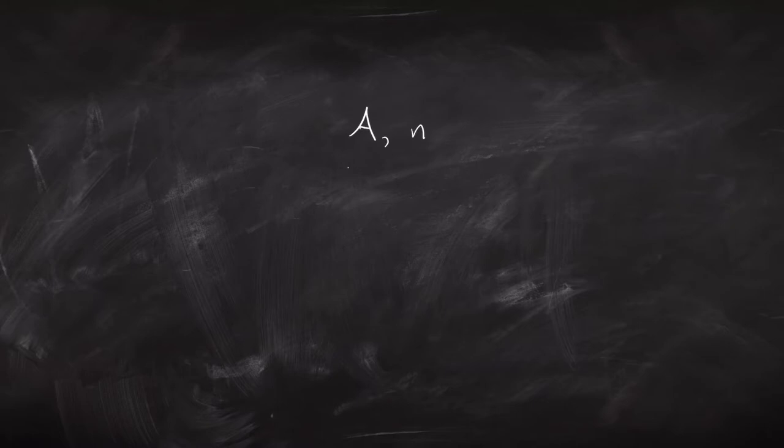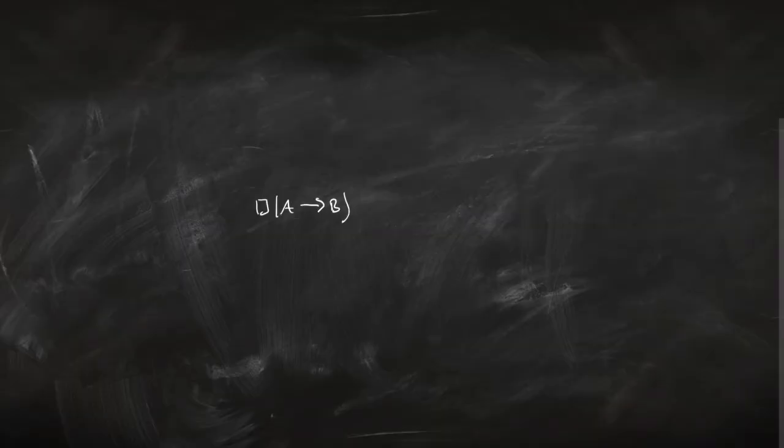With those four new rules, that's basically it — we do a tree just like normal. When do we close a branch? We close a branch when you've got a contradiction: A and not-A at the same world in the same branch. So if you've got P3 and you've also got not-P3, you close it. But it's no good if you've got P3 and not-P5, because that's saying P is true at one world and false at another — no contradiction there. Let's look at an example.